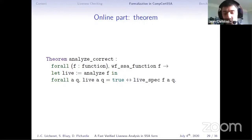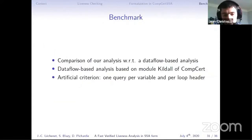But we wanted not only to have a correct approach, but also we wanted it to be efficient. So to ensure that, to be sure of that, we compare it with respect to the classic approach. For that we needed a set of queries. And for our experiments, we just used an artificial criterion, and we made one query per variable and per loop header.